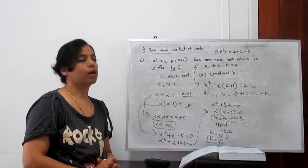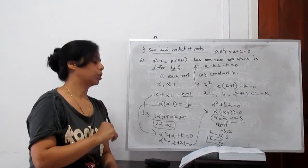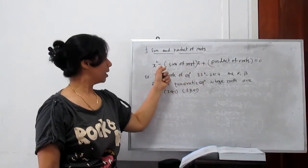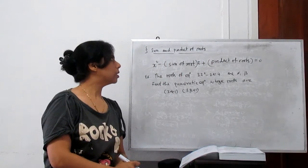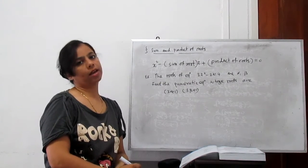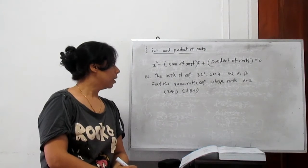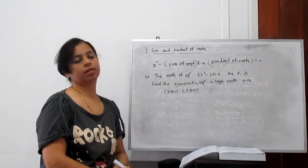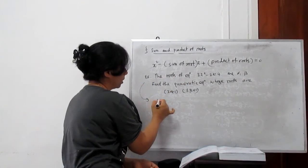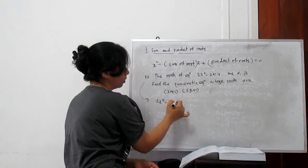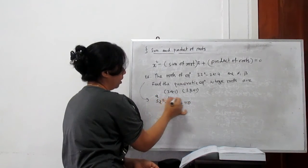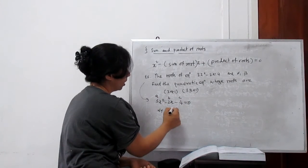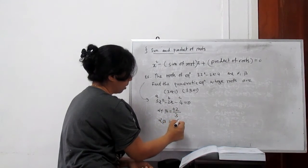Now, finding the quadratic equation from the roots. The formula is: x² - (sum of roots)·x + (product of roots) = 0. If you have the sum and product of roots, you can directly form a quadratic equation. Example: the roots of 3x² - 2x = 4 are alpha and beta. Converting: 3x² - 2x - 4 = 0, so a = 3, b = -2, c = -4. Therefore alpha + beta = 2/3 and alpha·beta = -4/3.